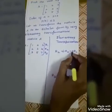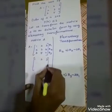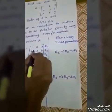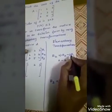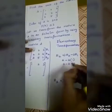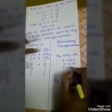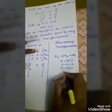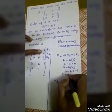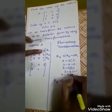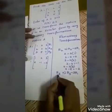For R2 equals R2 minus 2R1: R1 stays as 1, 2, 3. For R2: first element is 2 minus 2 equals 0. Next element is 3 minus 2×2 equals 3 minus 4 equals minus 1. Next element is 4 minus 2×3 equals 4 minus 6 equals minus 2. So R2 becomes [0, -1, -2]. R2 process is completed.